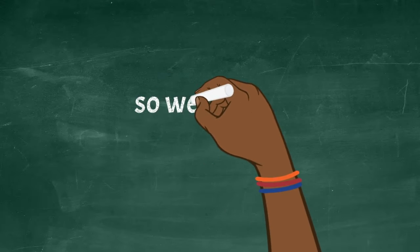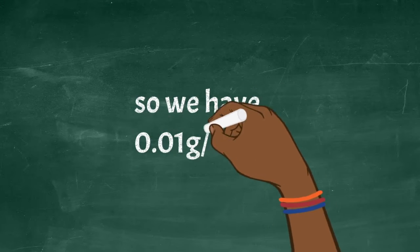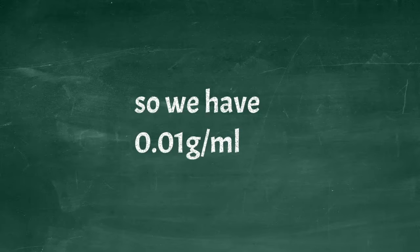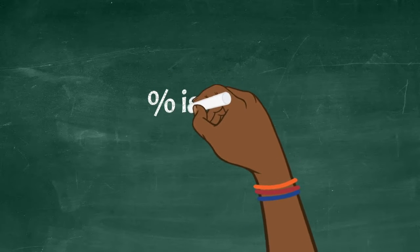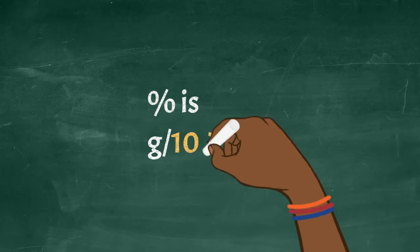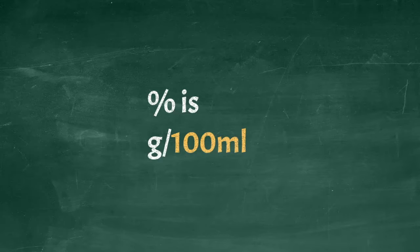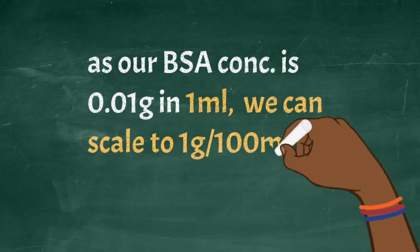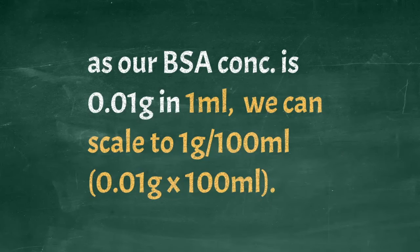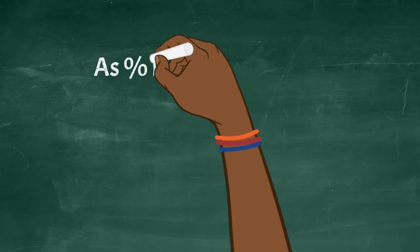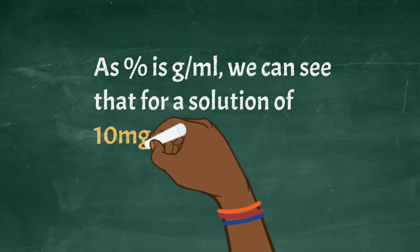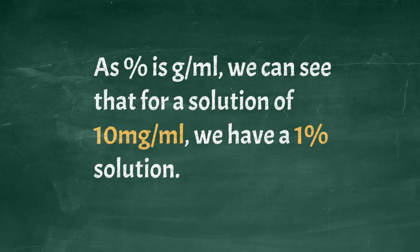So our 10 mg per milliliter therefore is actually 0.01 gram per ml. Again, a percentage is gram, 1 gram per 100 milliliter. So if we say that we actually have 0.1 gram in only 1 milliliter, then we can scale it up 100 times because we actually have that concentration in 1 ml. So if we scale it up 100 times, then we can actually see that we have a 1% solution because we have 10 mgs in a milliliter.